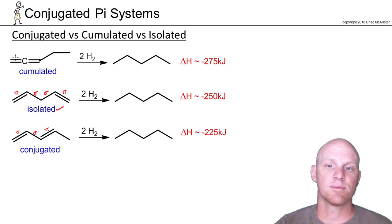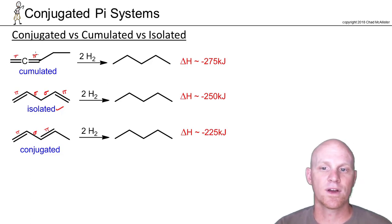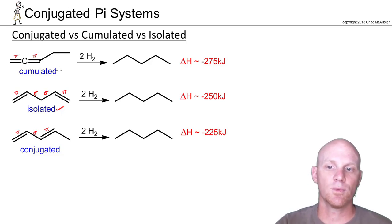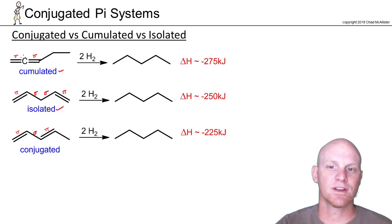If we've got pi electrons not separated by any sigma bonds, we call these cumulated. It turns out these will be using different sets of p orbitals that are not parallel in any way, shape, or form.